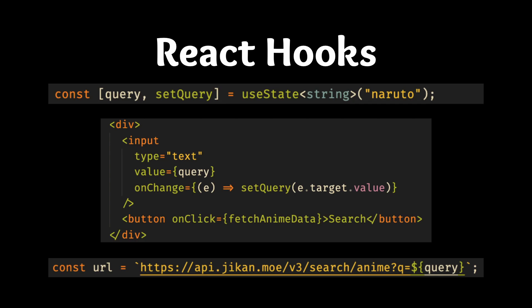Inside of our functional component, we have to create a state. This state is going to keep track of the query that we are specifying — we're going to add an input field, and any time we type in that input field, we're going to want to update the query inside of our component. The way to do that is to run the useState hook. This gives us a query variable and a setQuery function to update the query. By default, we're setting the query to be 'Naruto'. We create an input field bound to that query, and whenever it changes, we call setQuery with the current value of the input field.